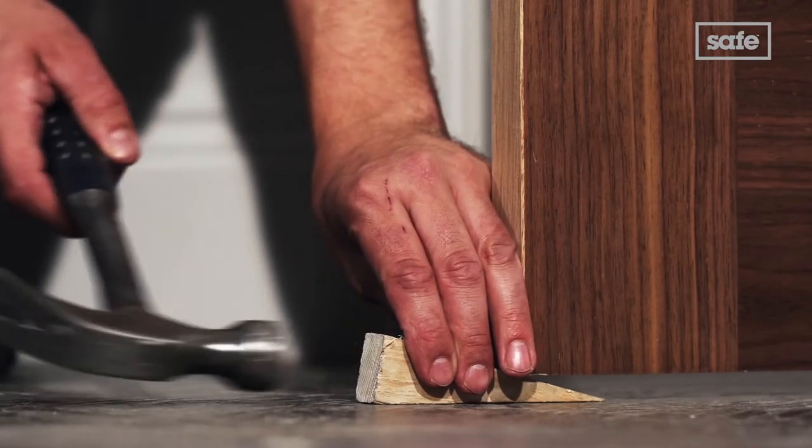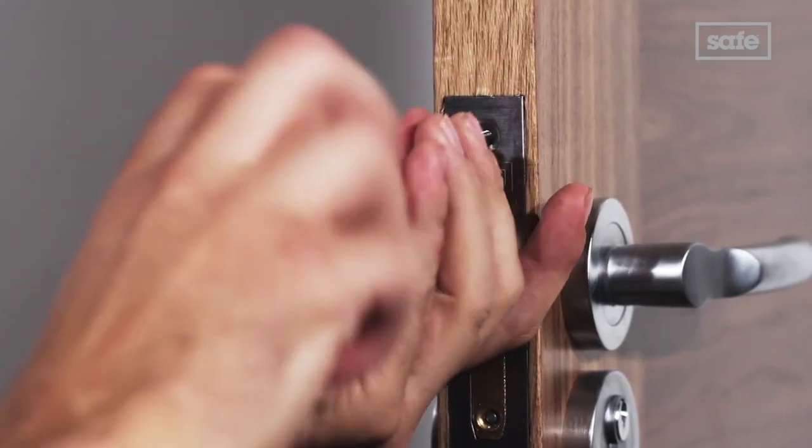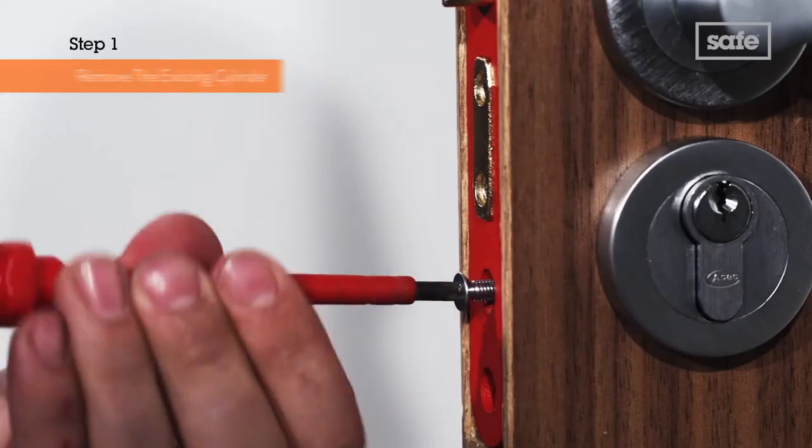Start by securing the door firmly with a wedge to stop it moving while you work. Then carefully remove the cover plate and undo the screw that holds the current cylinder in place.